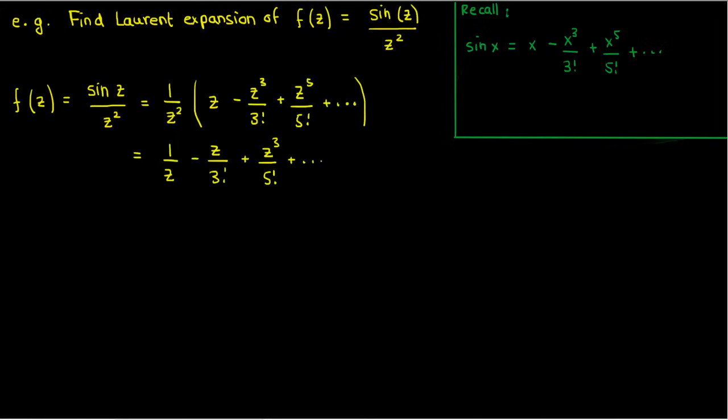In this case, we can see that f has a simple pole at z0 equals 0 because there's no terms that contain 1 over z squared or 1 over z cubed or any terms that have higher negative powers of z. We can also see that the residue of f at z0 equals 0 is just 1 because the coefficient of 1 over z is just 1.